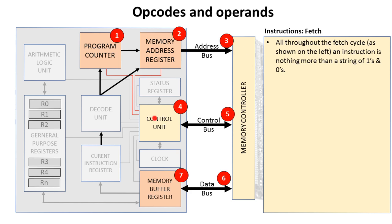The control unit sends a memory read signal down the control bus and then memory takes the contents of that address which was sent and sends it down the data bus and places it into the memory buffer register. All throughout this fetch cycle, as shown on the left, this instruction is nothing more than a string of ones and zeros.